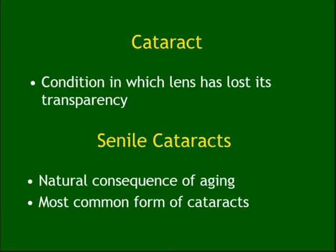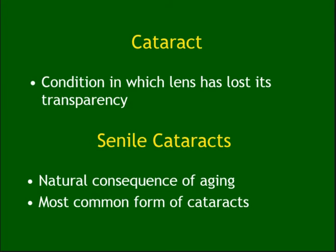Cataract — of course it's important. The lens should be transparent; if you lose the transparency, you get a cataract. Senile cataract is the most common cause — the vast majority of cases are senile cataract, meaning aging is the cause, with no accident or other problem.